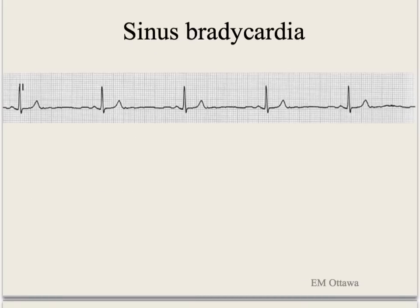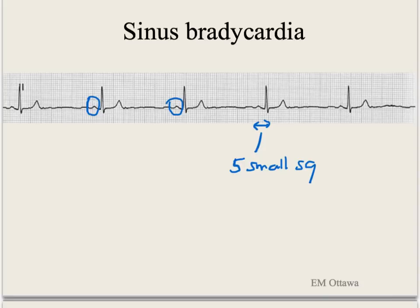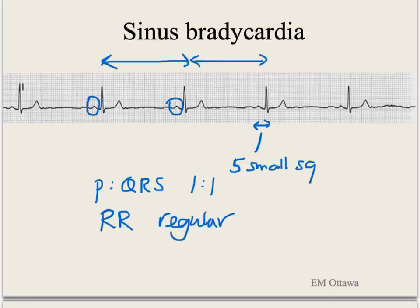Let's look at a few different rhythms. The first one is sinus bradycardia. In sinus bradycardia, the SA node is generating a slower than 60 beats per minute rhythm. Since it is coming from the SA node, there is a P wave. The PR interval is normal — normal being less than 5 little squares. There is a P before each QRS and a QRS after every P. The RR intervals look regular, and the QRS is narrow.